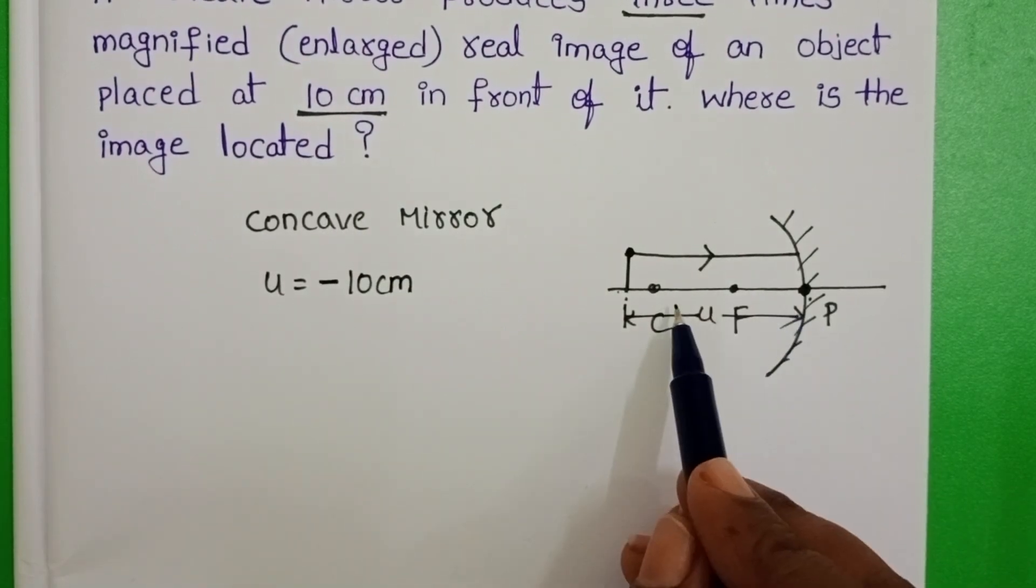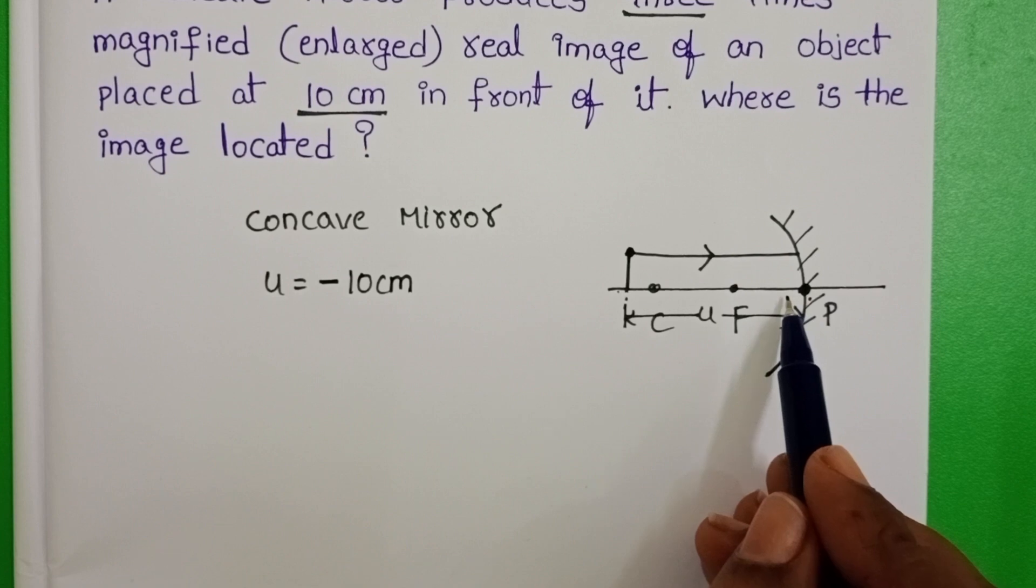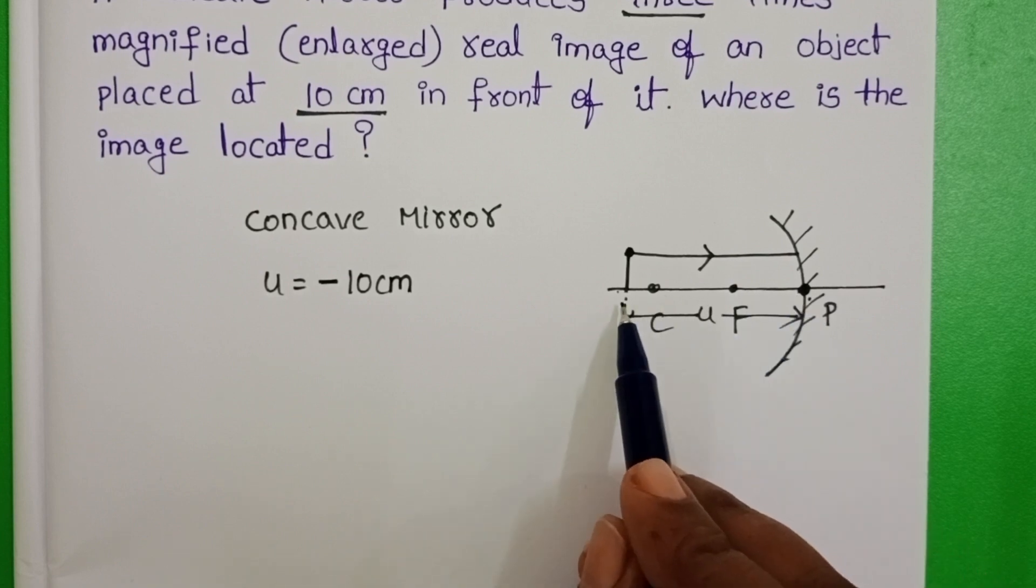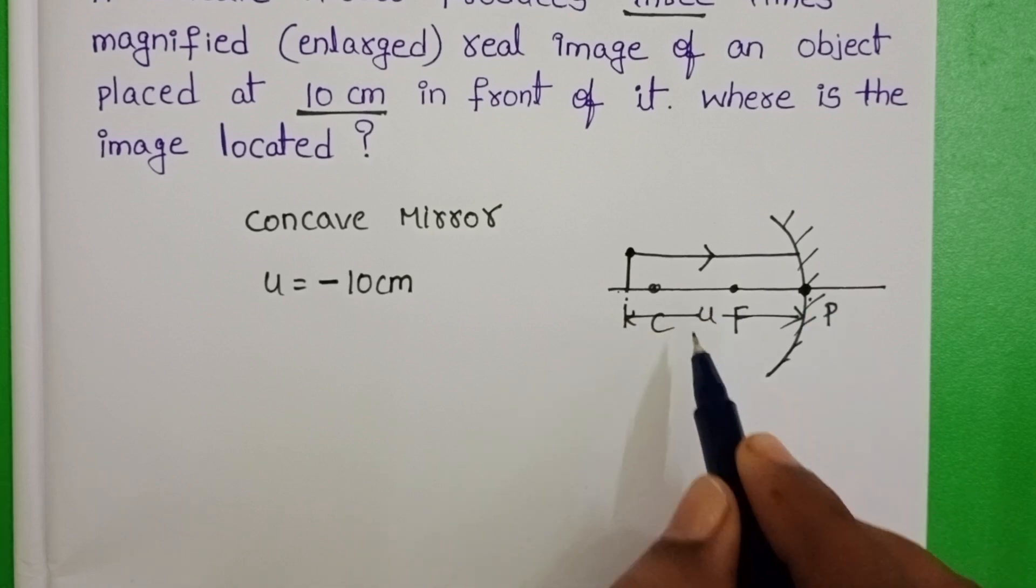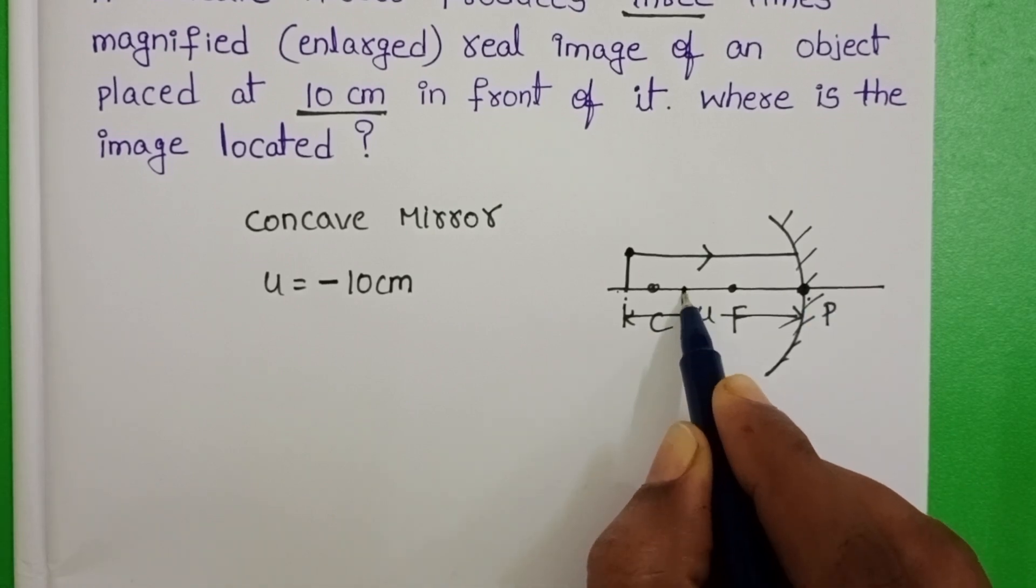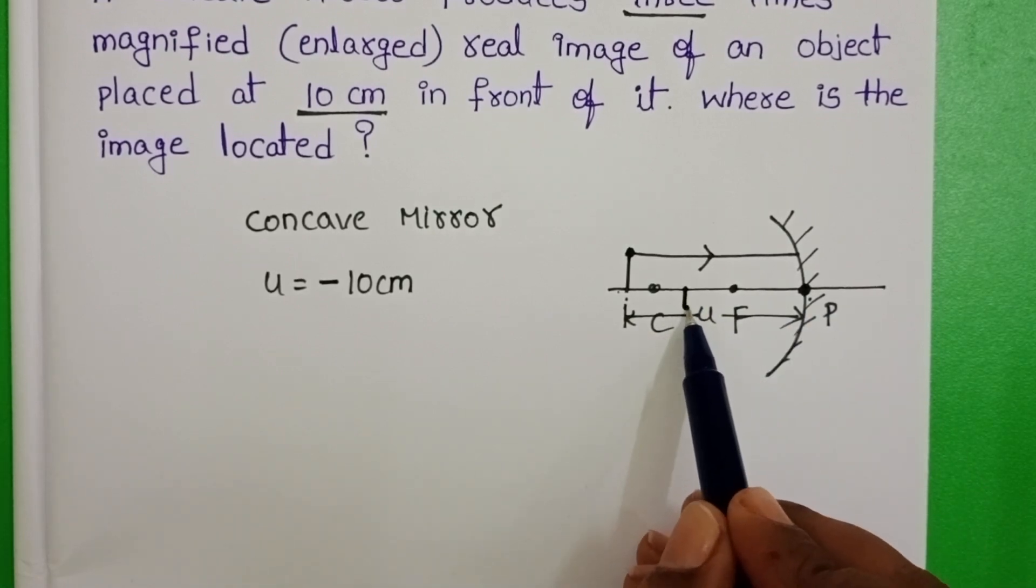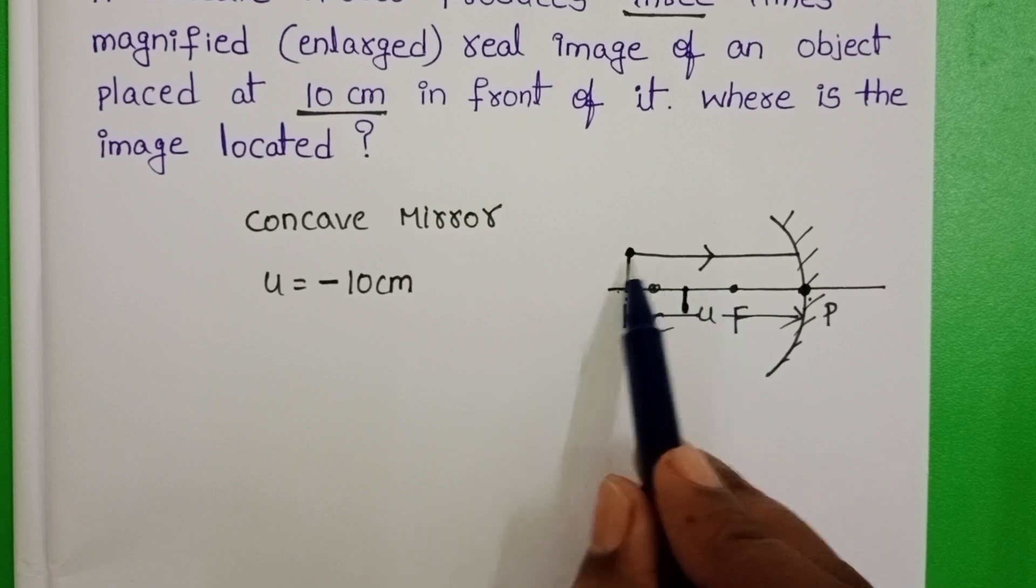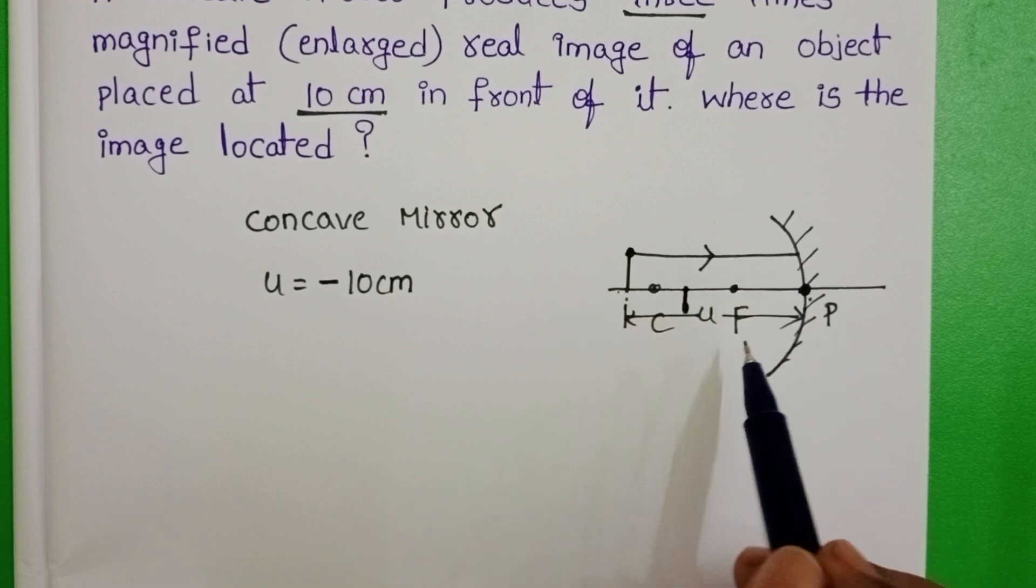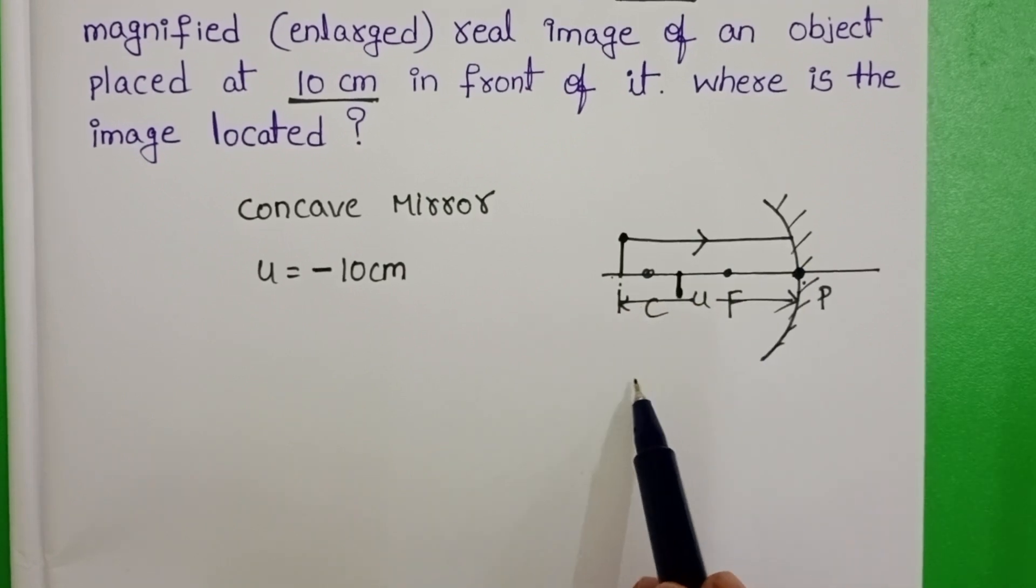When we get the real image, real image is also produced in the same side of the object. So, again take the position of the image. This is only example. Take this is the position of the image. The image distance from the pole also opposite to the direction of the incident ray. So, image distance also negative.